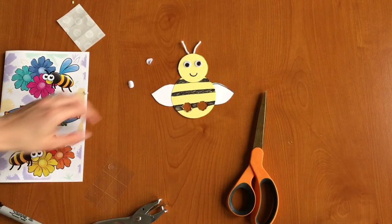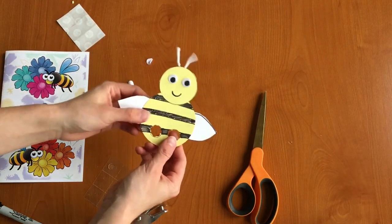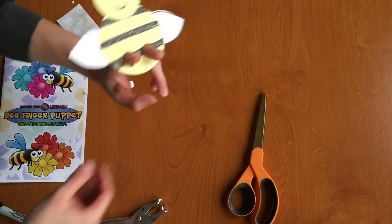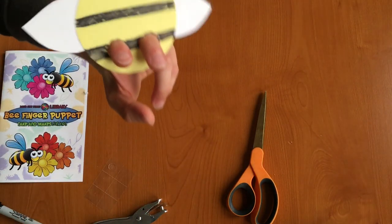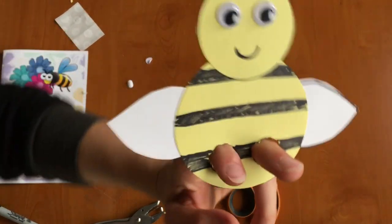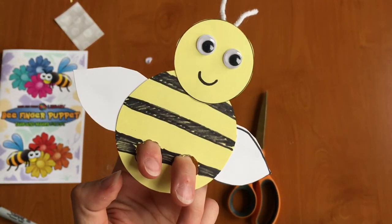And there you have it. That is your bee finger puppet. So now you can fly him around the room with your fingers through those little holes. Very cute. Good job guys.